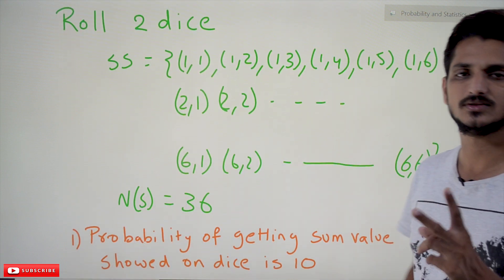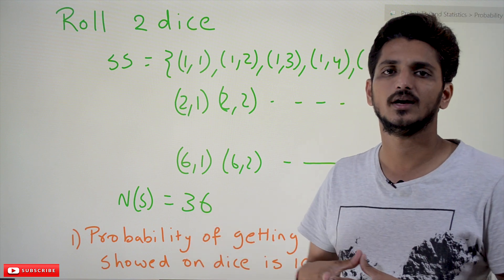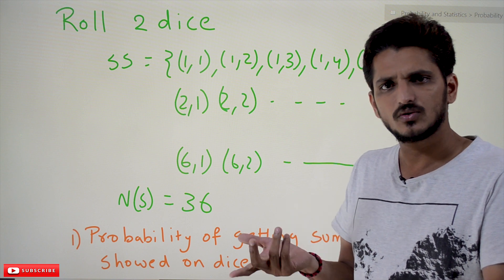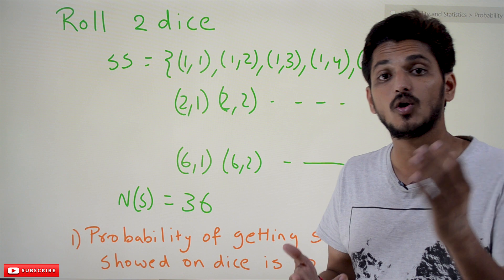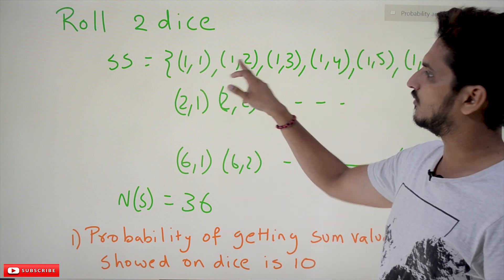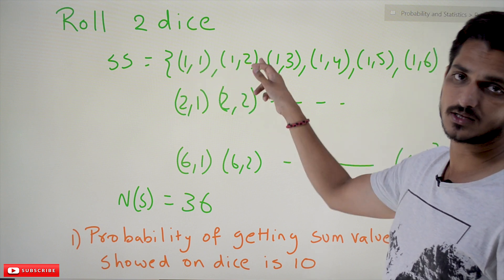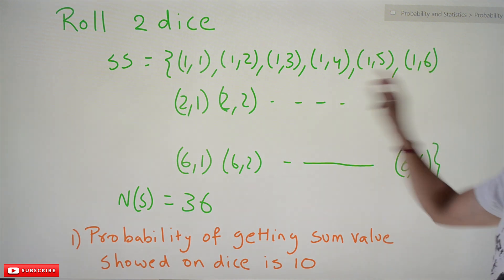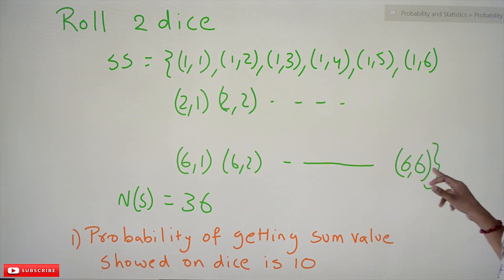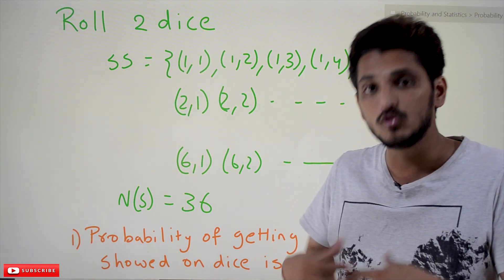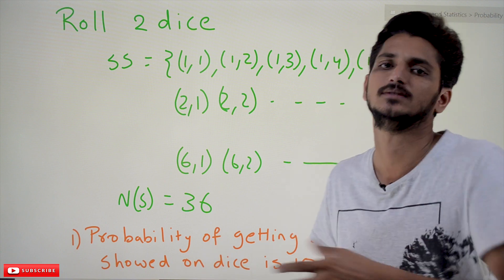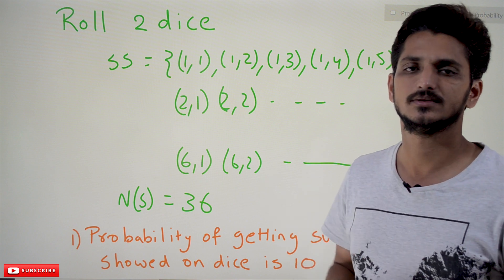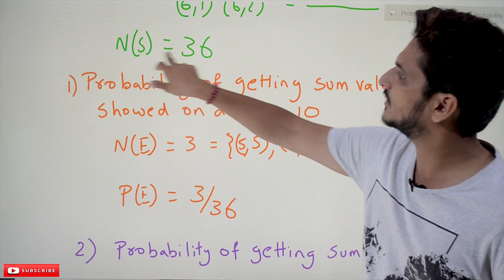Next example: when we roll two dice, what are all the possible outcomes? One dice may show 1, the other may show 1; one may show 1, the other 2; and so on — (1,1), (1,2), ..., (1,6), (2,1), (2,2), ..., (6,6). Total 36 possible outcomes are there. That is the sample space. N(S) = 36.